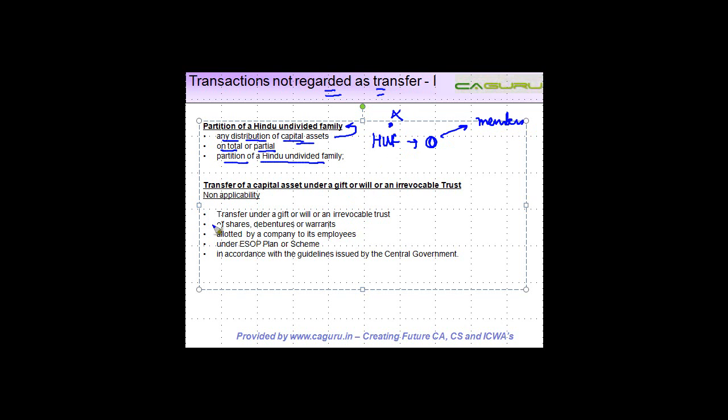Similarly, transfer of a capital asset under a gift. So let's say there are two people A and B. A gifts something to B, or a will or an irrevocable trust. So on this gift, A is not going to be charged to any tax. No tax on A.